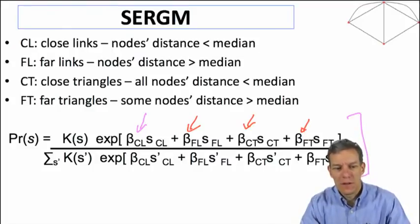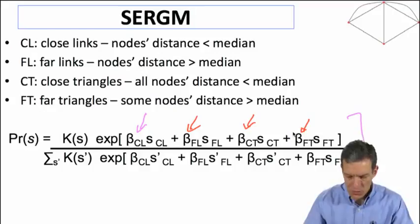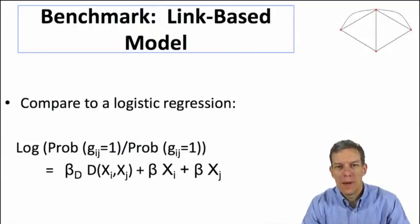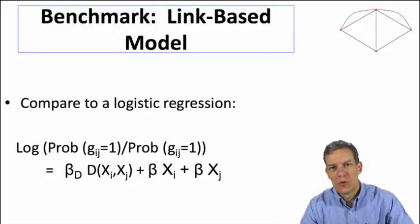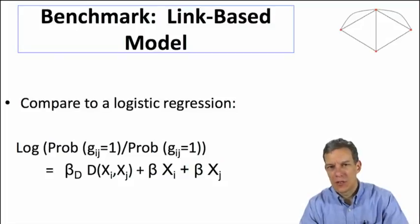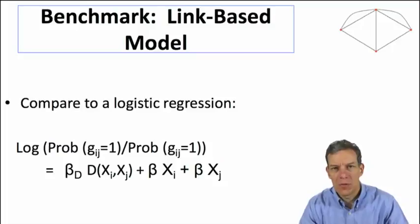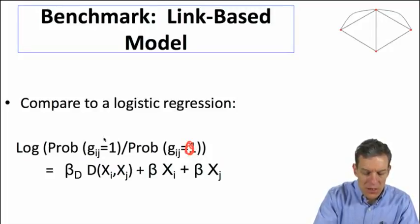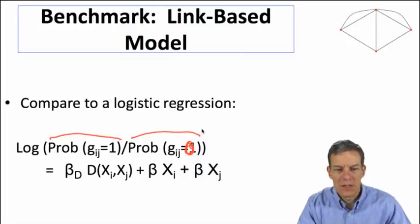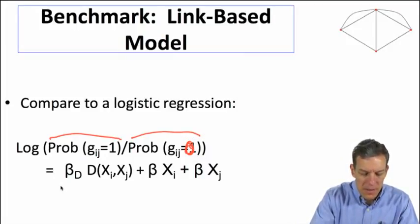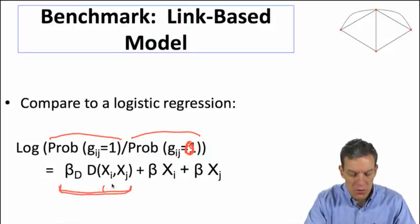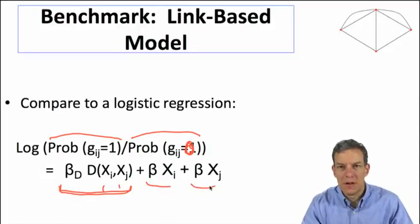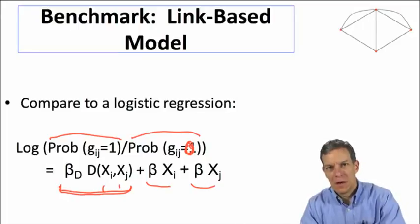We can fit this model to the data and estimate each parameter. The model we'll compare it to ignores the triangles and just estimates link formation directly — a standard logistic-style model that estimates the probability that two nodes are linked. We look at the log odds ratio: the probability that Gij equals one versus zero, based on the distance between nodes and their characteristics.